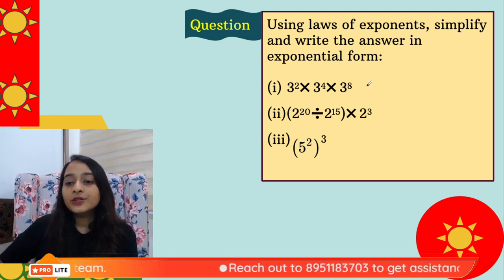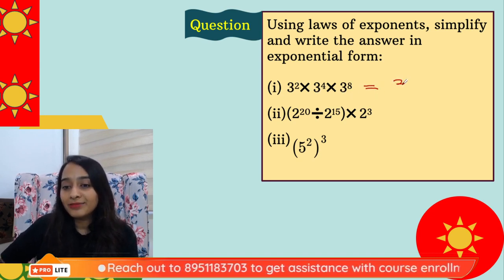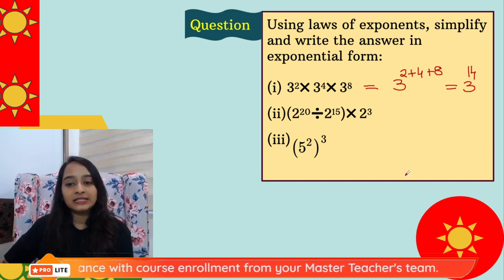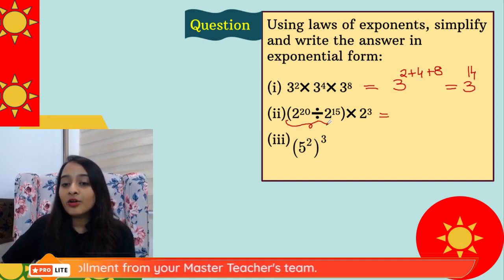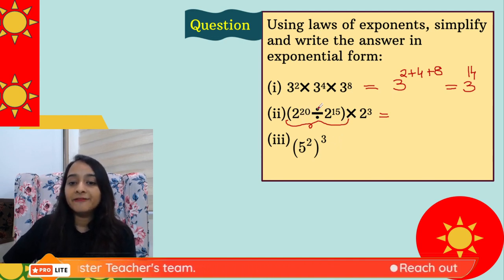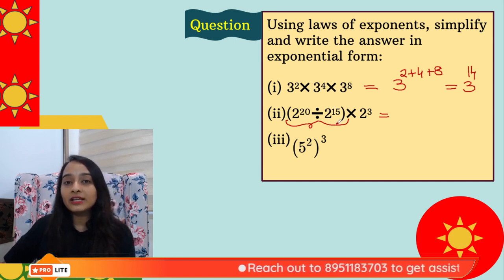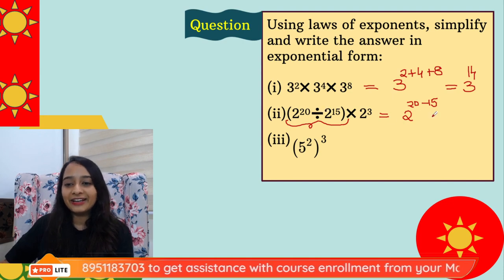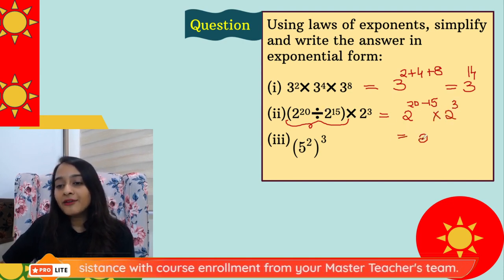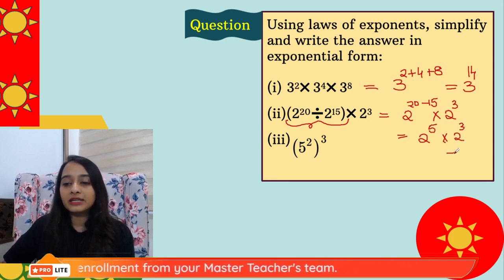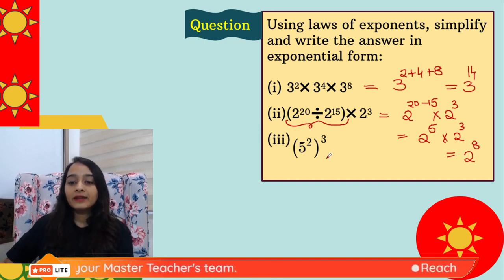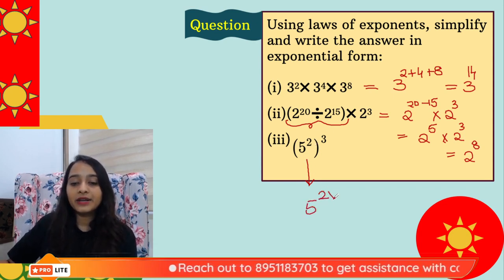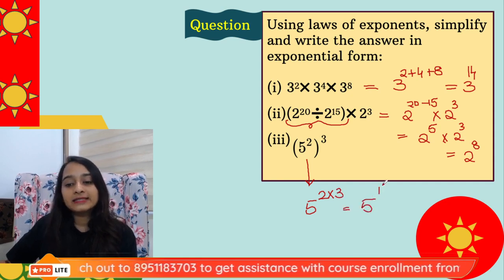Let's simplify and write in exponential form. First: all bases are the same, so keep the base and add all exponents — the answer is 3^14. Second: inside the bracket, 2^20 ÷ 2^15 — same base, subtract exponents — gives 2⁵, then multiply by 2³ — same base, add — giving 2⁸.